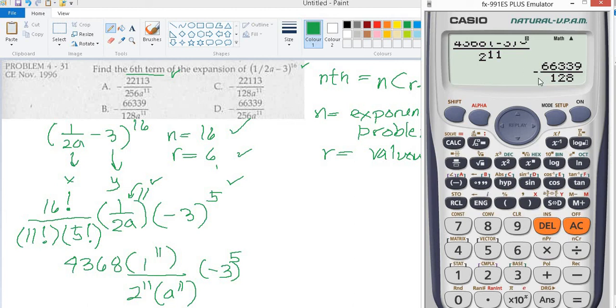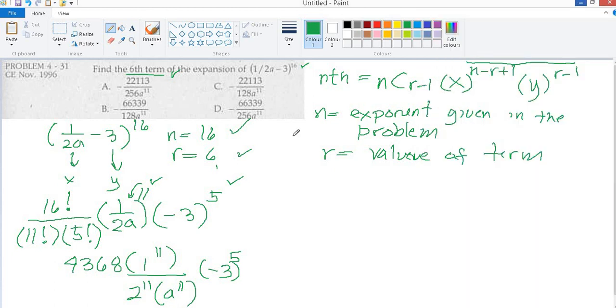So the answer is 66339 over 128, negative. So the answer is B. So we don't need to use the formula. Simplifying negative 66339.